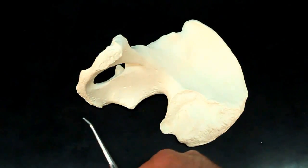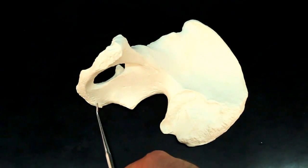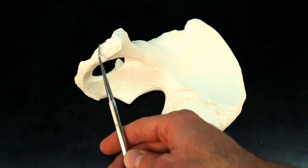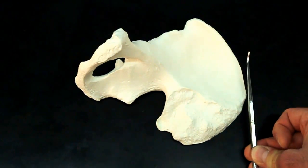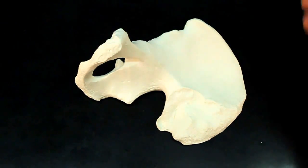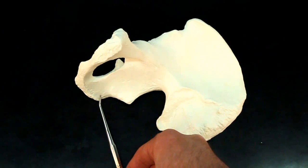Then you have the ischium region, which is down here, and this part up here is going to be the pubis region. Ilium is superior, pubis is anterior, ischium is posterior.